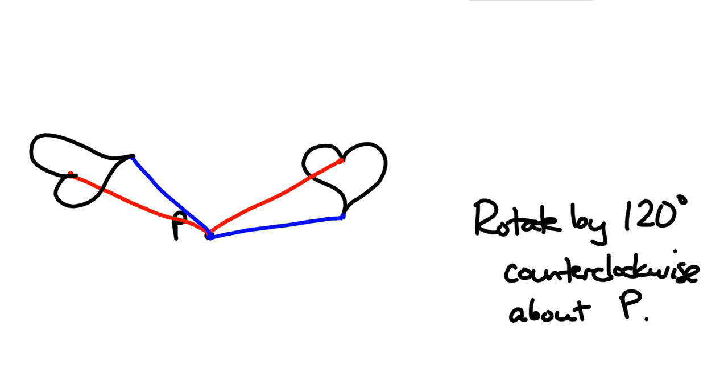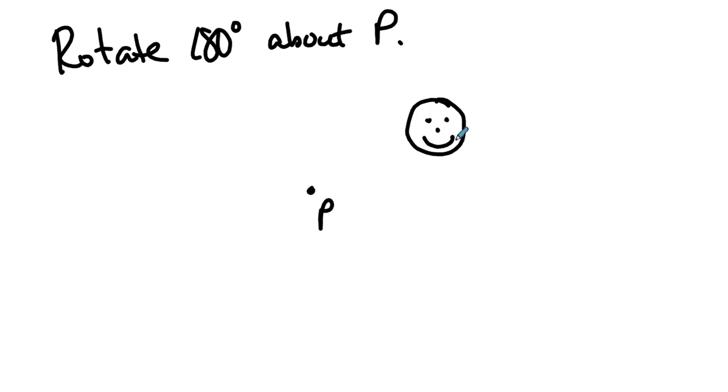By far, the easiest rotation is the 180 degree rotation. Here's point P. You have some, I don't know, some object.